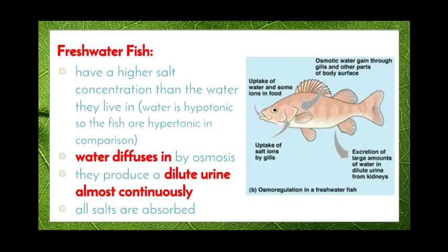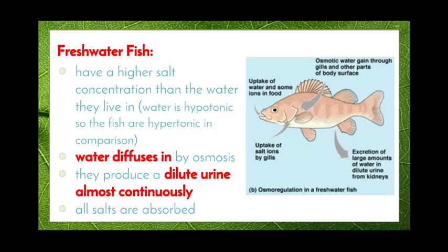Freshwater fish, on the other hand, live in lakes, rivers and ponds where there isn't a salty environment. As a result, the fish themselves have a higher salt concentration than the water they live in — the water is hypotonic. Water diffuses into the fish by osmosis, so freshwater fish don't need to drink much. They take in salts through their gills and produce a dilute urine with a lot of water almost continuously. Their kidneys work hard to get rid of excess water and absorb salt, so their urine is high in water but low in salt.